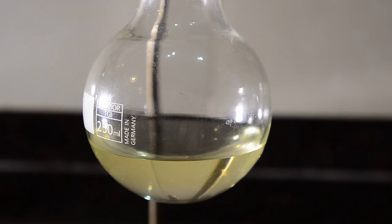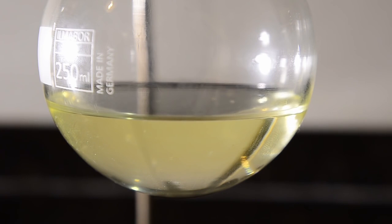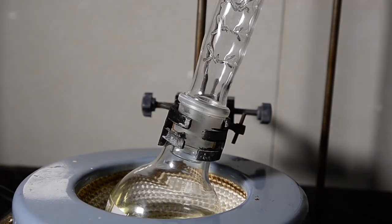Here's our final distillate, it has a slight yellow color as you can see. This definitely contains acetic anhydride, but also smaller impurities such as acetic acid and maybe some ketones as well.